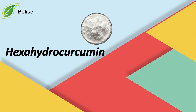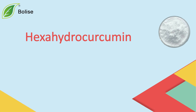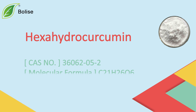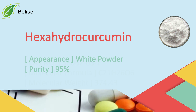Hexahydra Curcumin. CAS No. 3606-05-2, Molecular Formula C21H26O6. Appearance: White Powder, Purity: 95%.